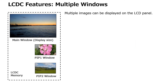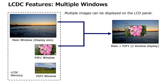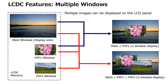Epson LCD controllers allow image data from multiple windows to be stored and overlaid during display. For example, a main window that is the same size as the display panel can be combined with another window to achieve a two-window display, or a three-window display.